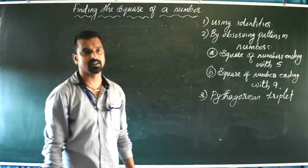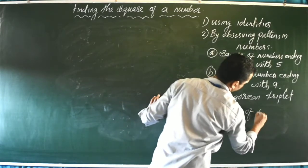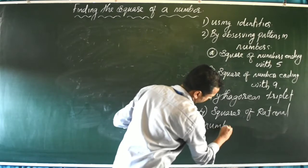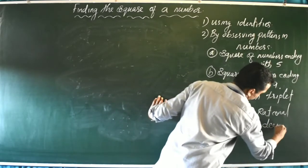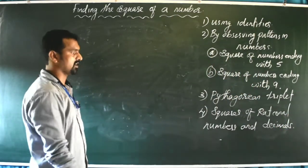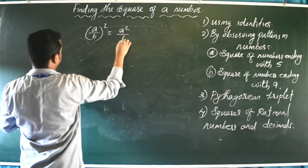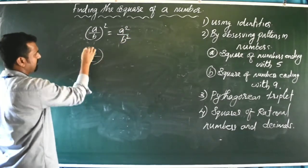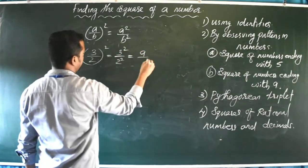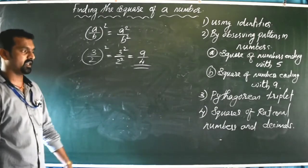The next topic is squares of rational numbers and decimals. To find the square of a rational number, we use the formula: (a/b)² = a²/b². For example, (3/2)² = 3²/2² = 9/4.